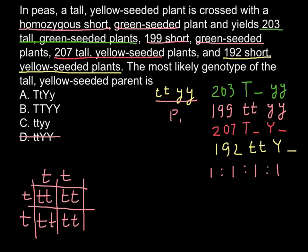We can also cross out answer C, because we cannot have two parents that are both homozygous short. We would never be able to get tall plants at 50%, as we see in our results, when crossing a homozygous short plant with another homozygous short plant. There is no way to get tall offspring.